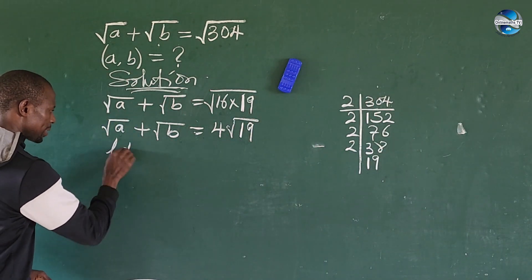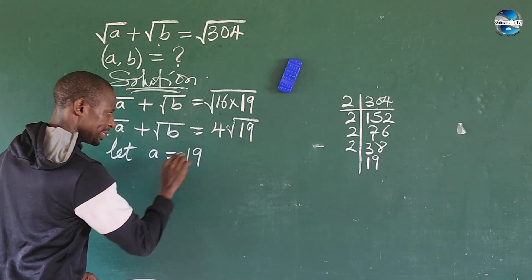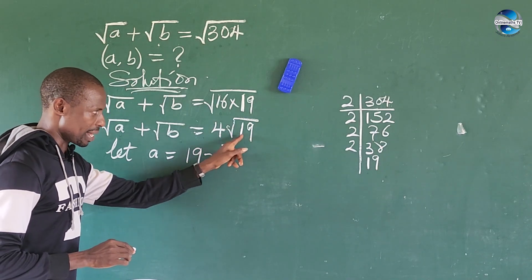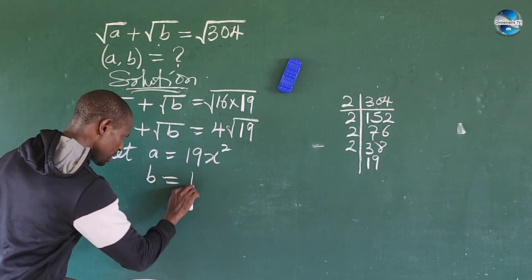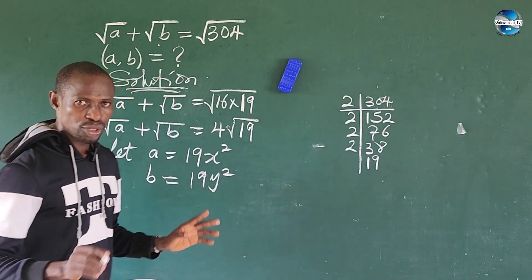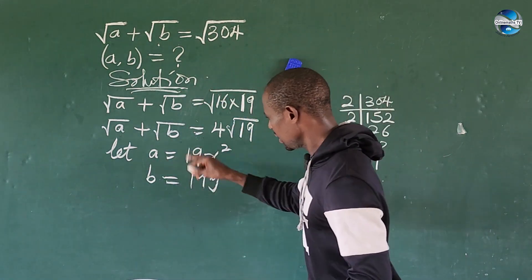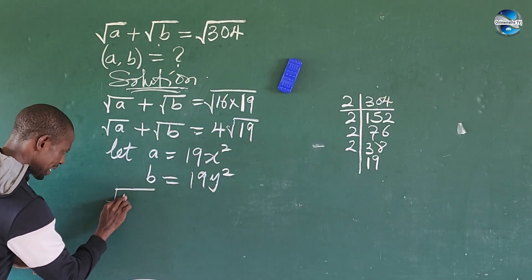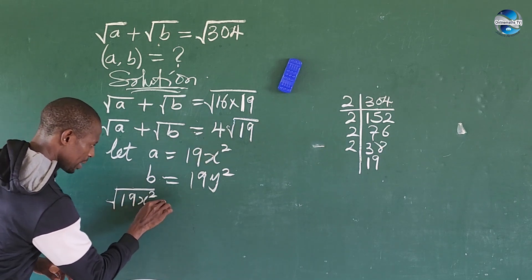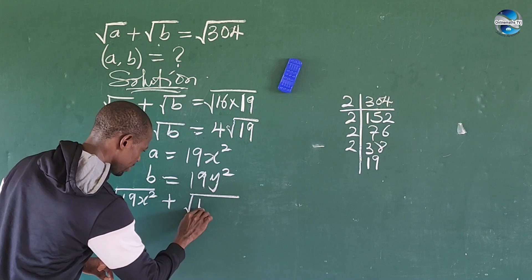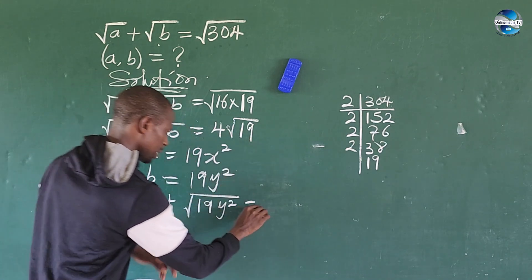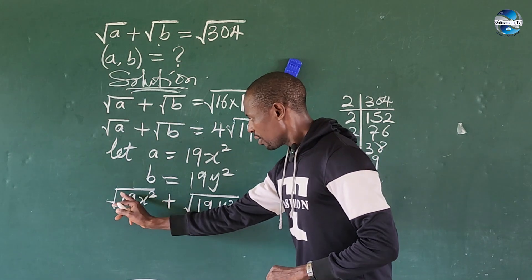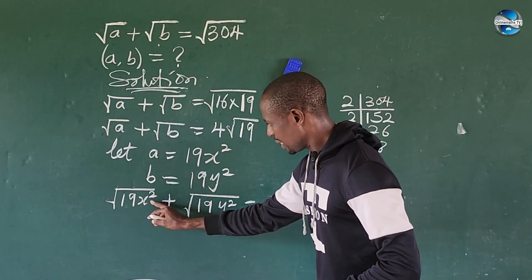Let a equal 19x² and b equal 19y², where x and y are values we need to find. Substituting into the left side, we get: square root of 19x² plus square root of 19y², which equals the right-hand side, still 4 times the square root of 19.